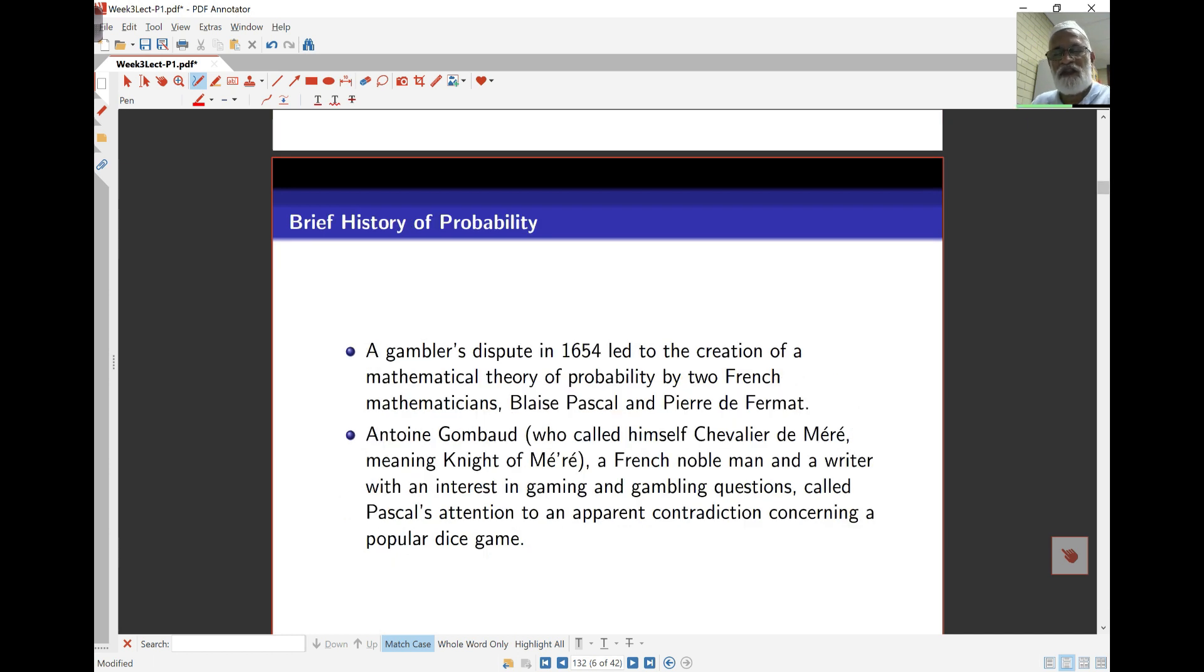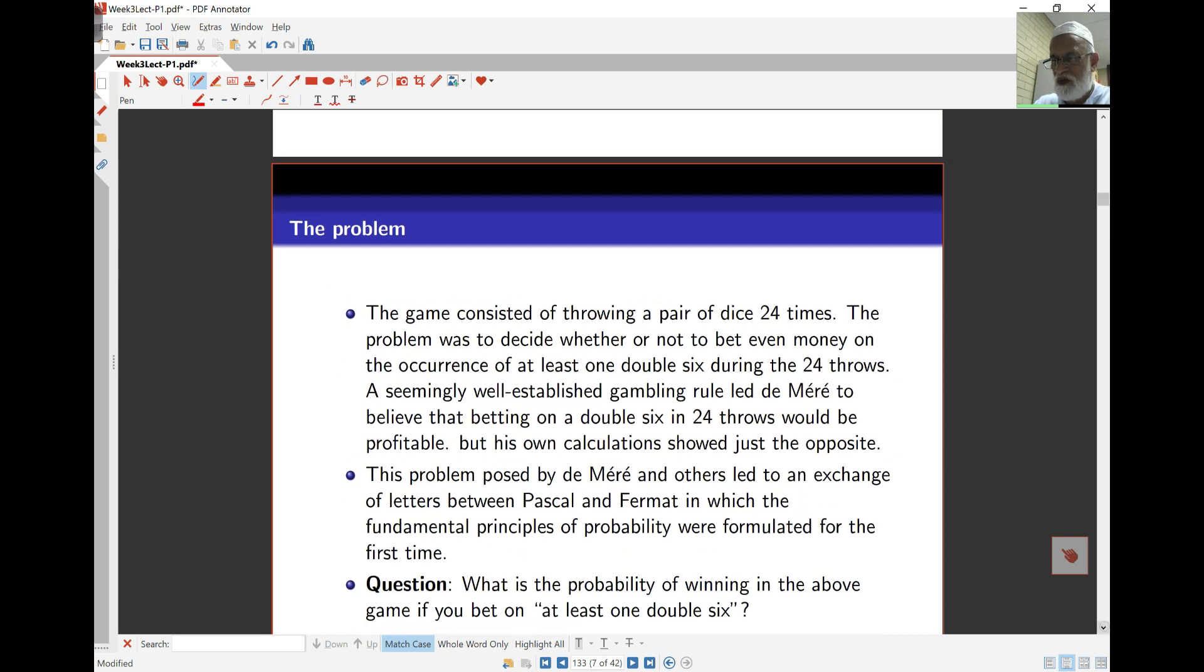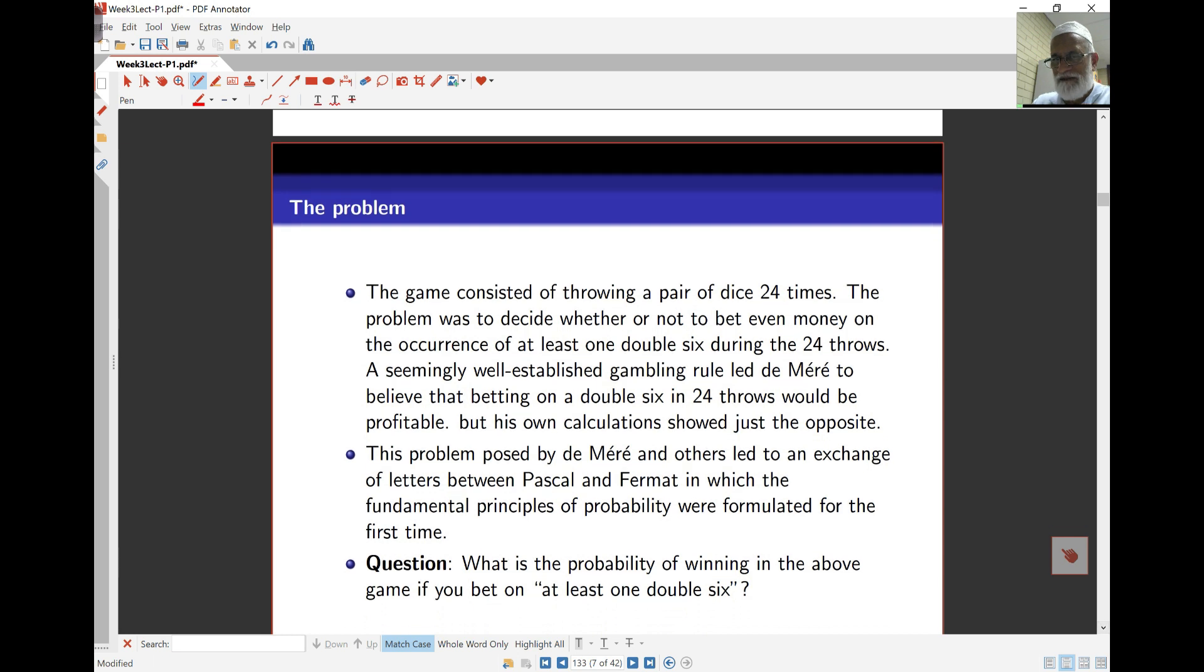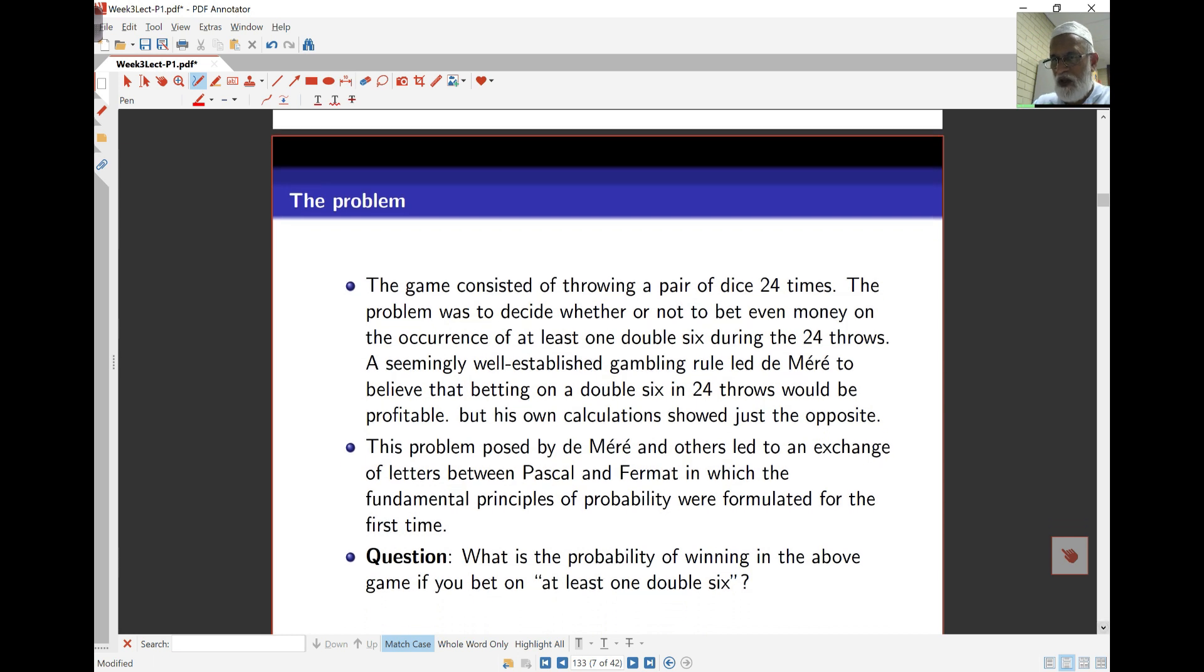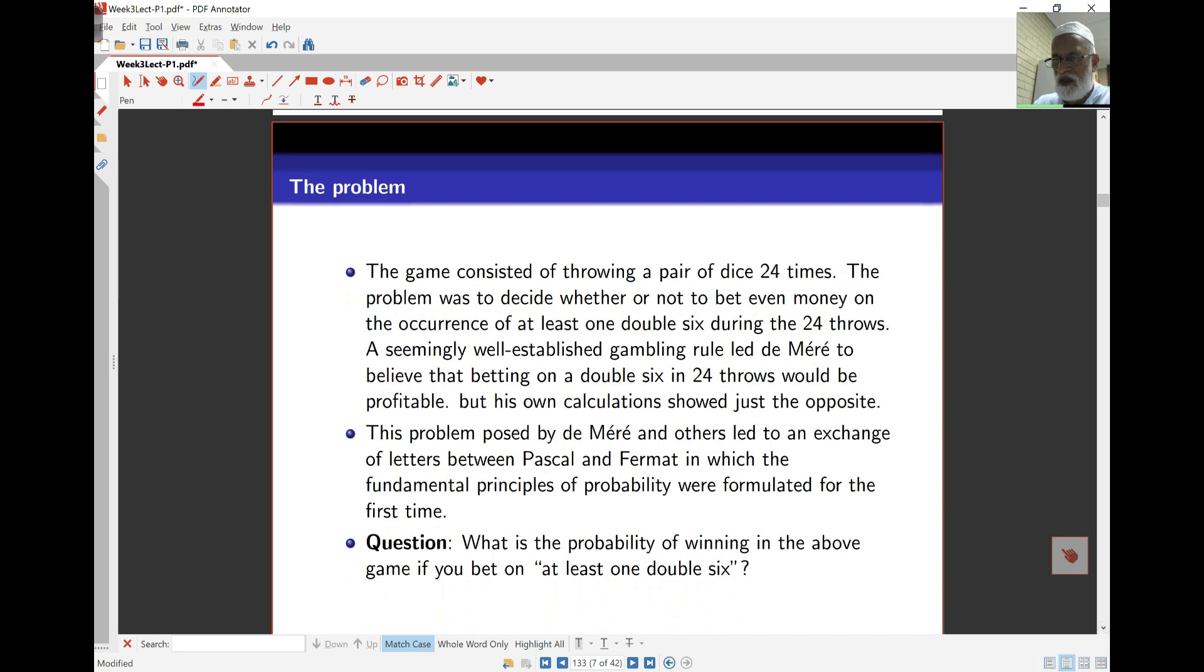This is a brief history which I'll let you read yourself. I won't go through all the details. You can try to solve the problem here. The game involved throwing a pair of dice 24 times, and the problem was to decide whether or not to bet even money on the occurrence of at least one double six during the 24 throws.